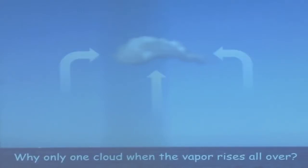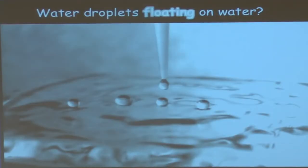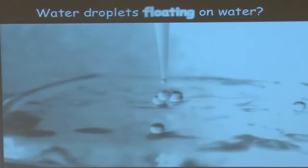I want to start with three examples to demonstrate that we really don't know a lot about water. Here's the first: a simple cloud sitting above water. The question is, how come there's only one cloud sometimes when water is rising everywhere? Why isn't there a continuous cloud always over the water? Something is going on — the cloud seems to be attracting the rising moisture somehow.